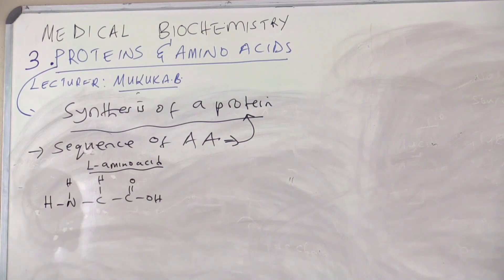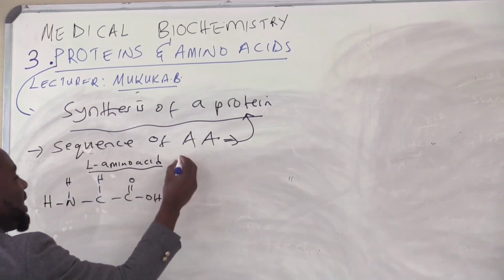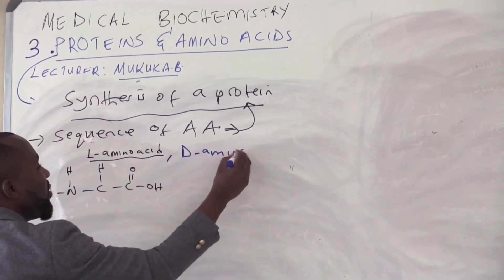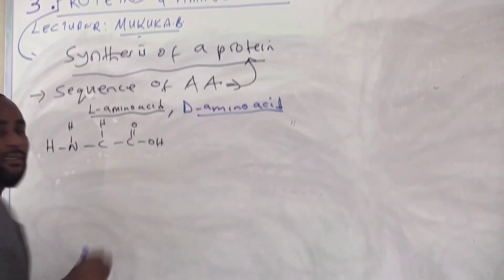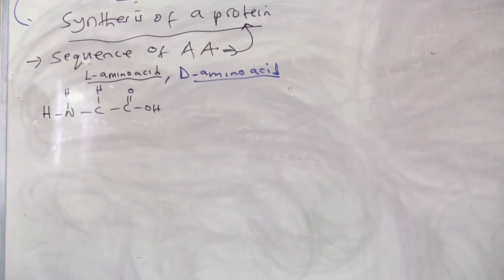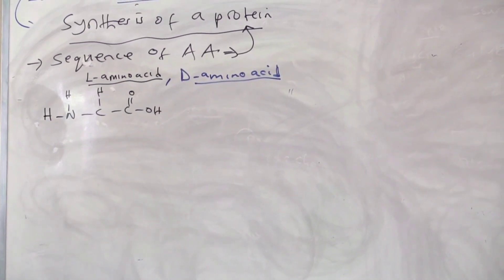It doesn't mean D, the other type which is D-amino acids, are not useful. They are also used in other parts of the body. For example, the brain tissue has been known to contain some amino acids like glutamate, but our focus is the L-amino acid.